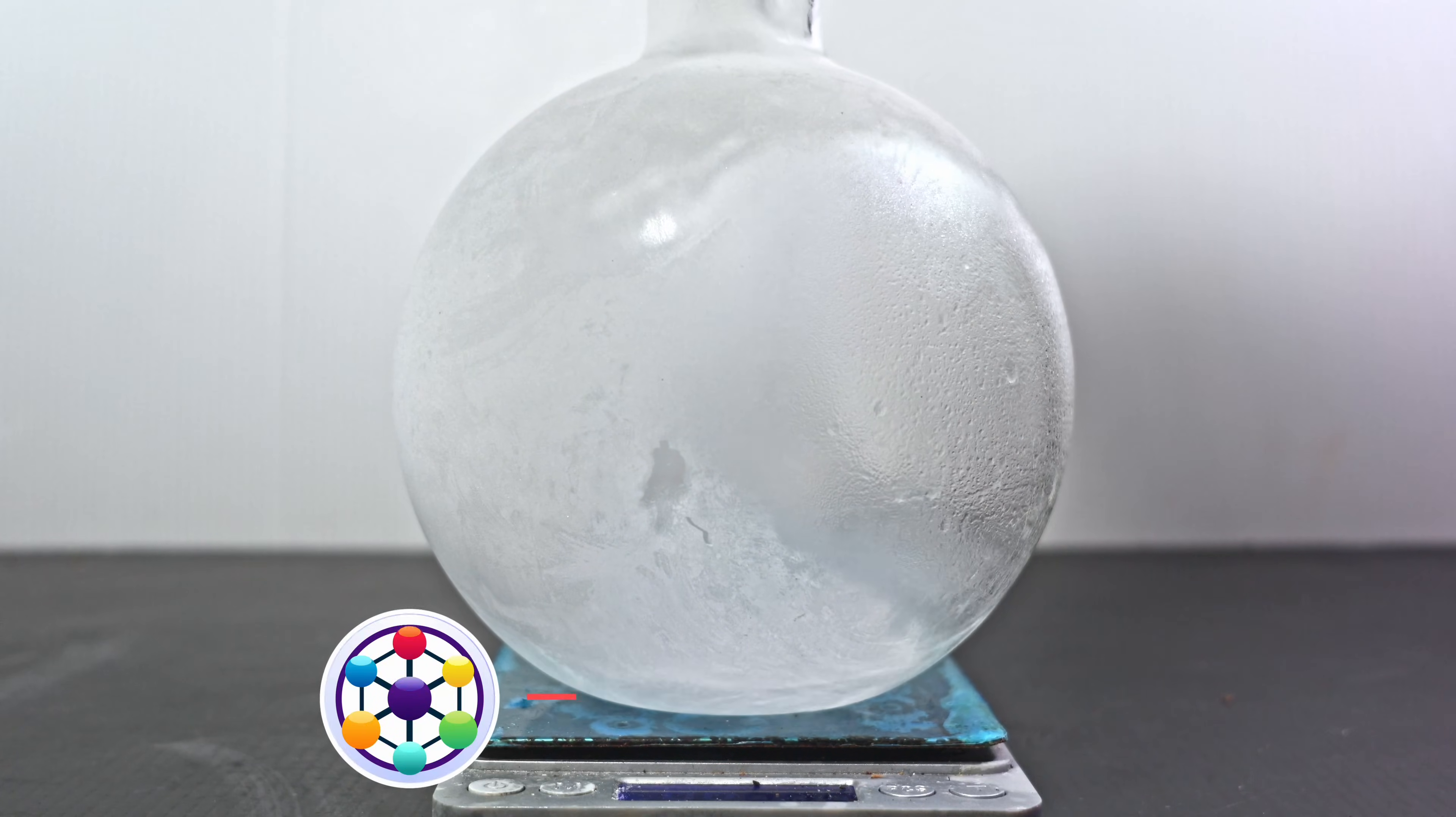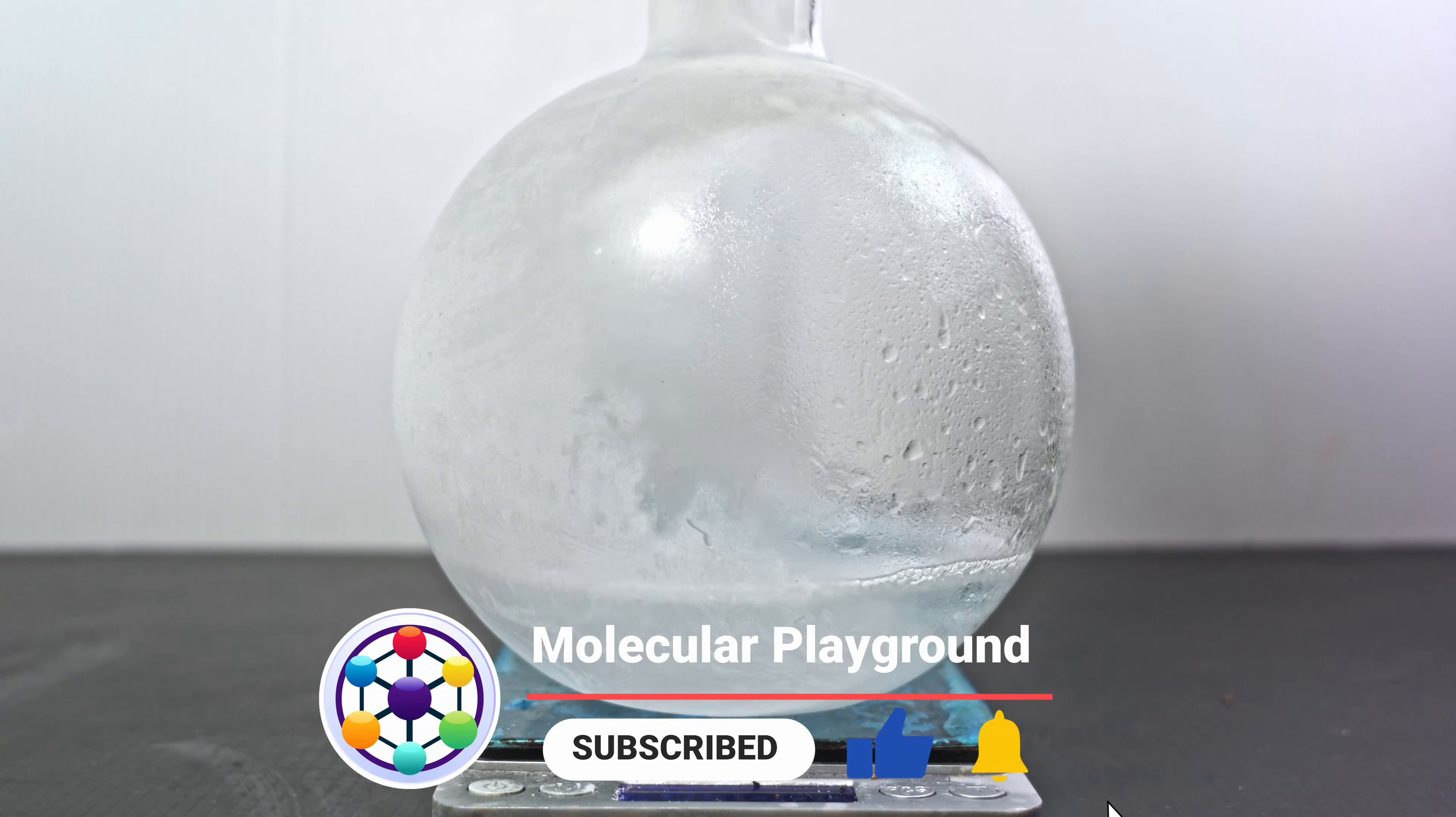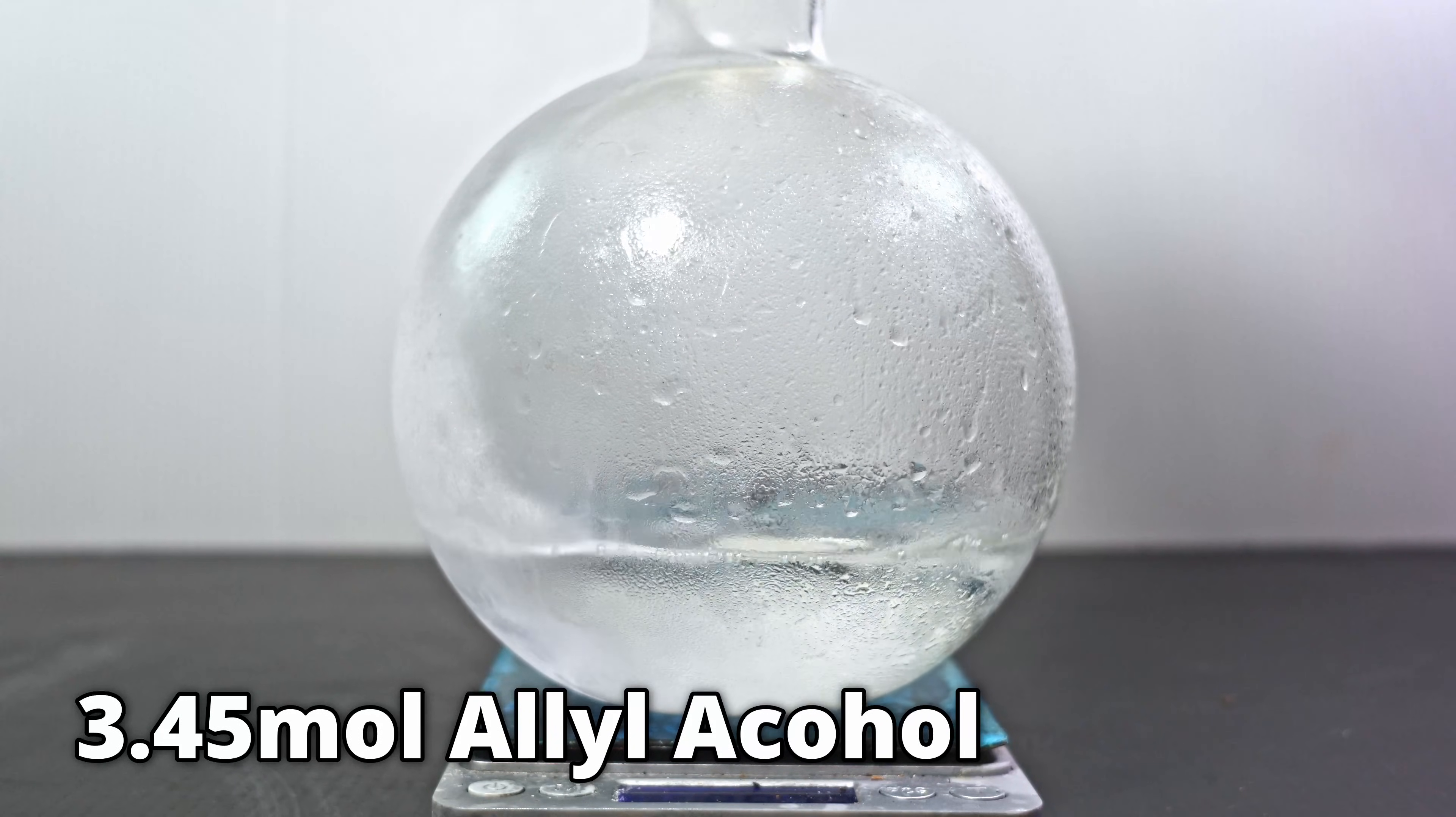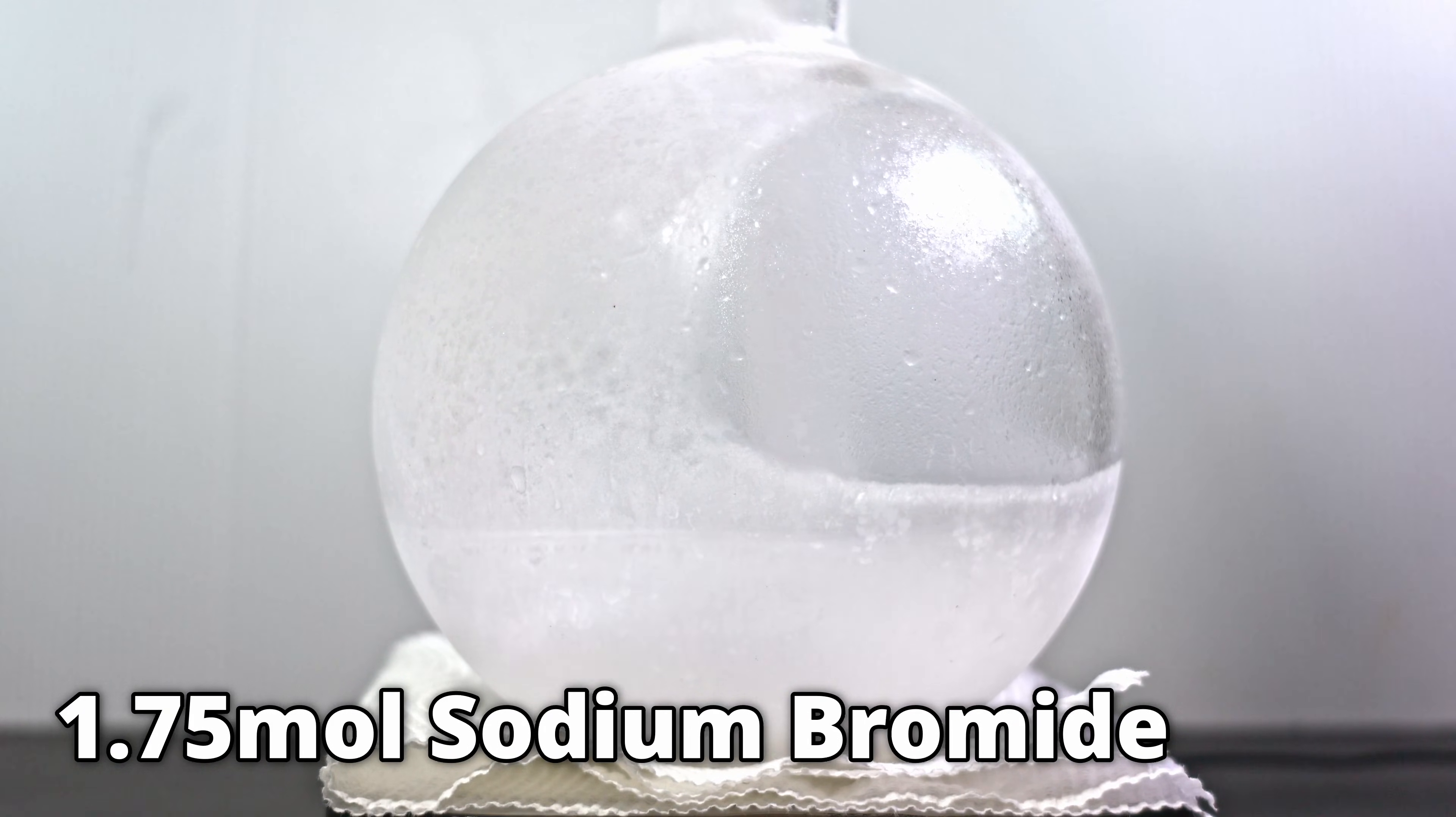In a freezing 1L boiling flask, I add the first half of my allyl alcohol solution, which is about 300ml of 70-something percent allyl alcohol. This contains around 200g of allyl alcohol, or 3.45 moles. While stirring, I add 180g of freezing sodium bromide. This is approximately 1.75 moles of sodium bromide.